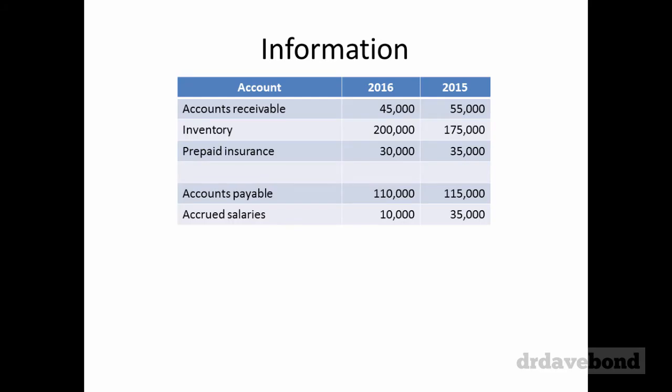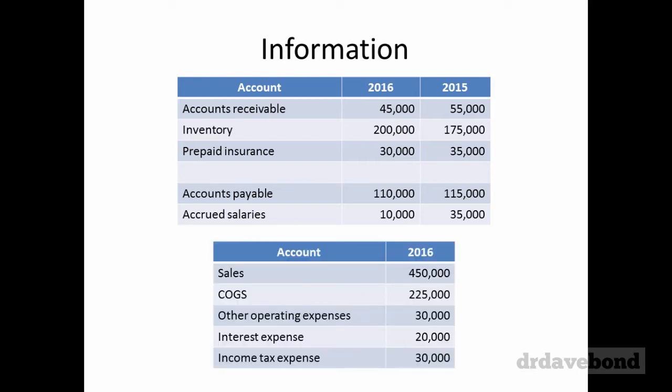Some basic information at this point — it's not all of the information but it's enough to start us off with the operating cash flows. We have some select balance sheet information, two years worth: accounts receivable, inventory, prepaid insurance, accounts payable, accrued salaries. We also have some profit and loss information: sales, cost of goods sold, other operating expenses, interest expense, and income tax expense.